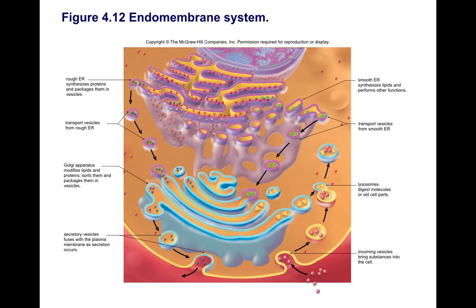The Golgi apparatus is this light bluish structure shown here — really just a stack of flattened sacs. I like to compare it to a trucking warehouse or distribution center, where materials are brought in from the ER, then sorted and repackaged, and eventually sent out. This diagram also shows lysosomes — membranous vesicles that contain many digestive enzymes and serve to break apart unwanted material within the cell. They are related to many clinical conditions; your textbook mentions Tay-Sachs disease as an example.